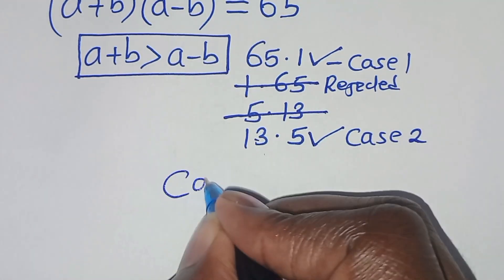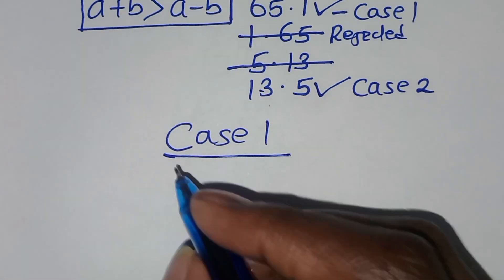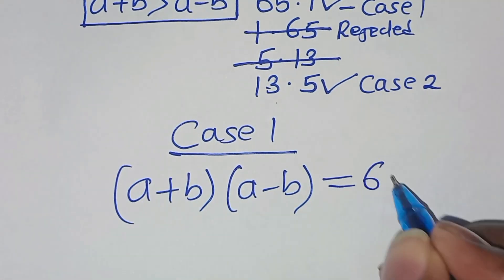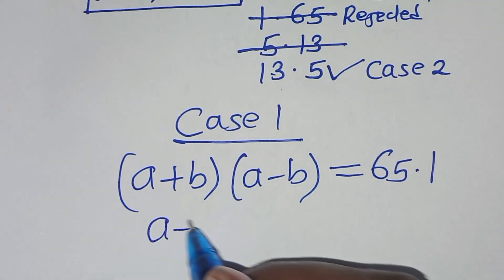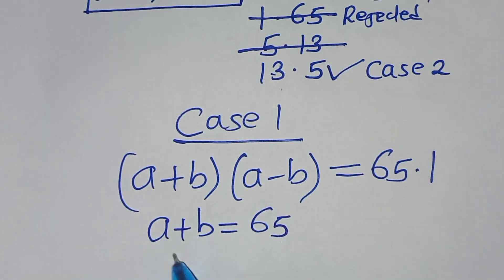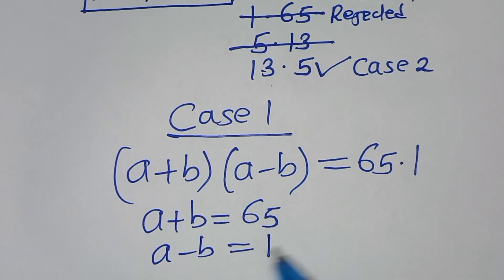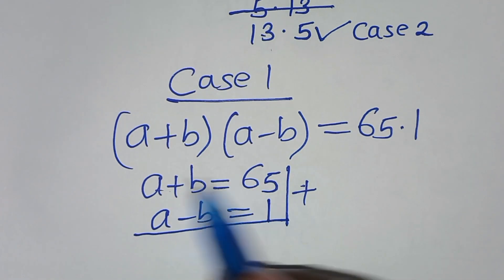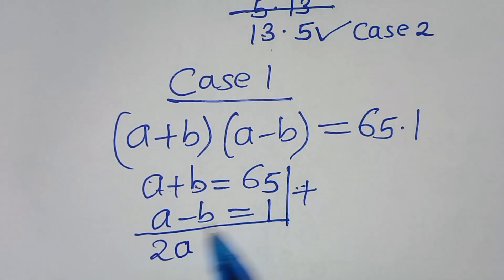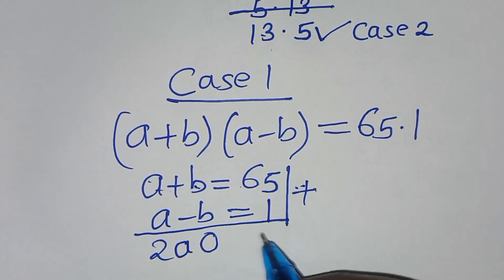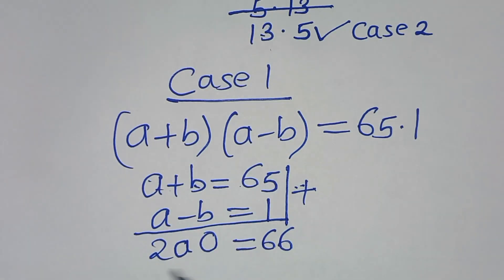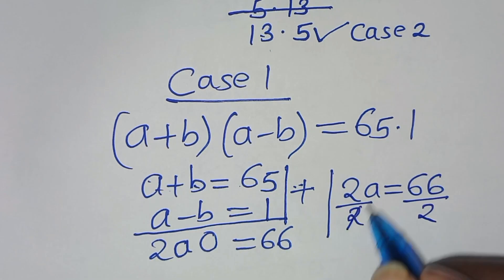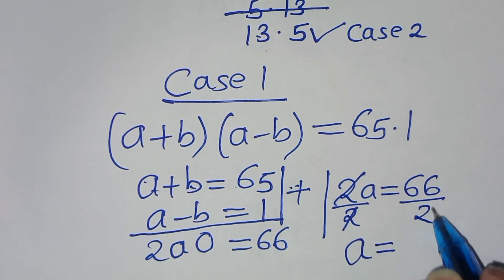Let's start with case 1. In case 1, we have a plus b multiplied by a minus b, this is equal to 65 multiplied by 1. So we have that a plus b equals 65, and we have that a minus b equals 1. This is a system of two simultaneous equations. Let's add these two equations: a plus a is 2a, and b plus minus b cancels. Dividing both sides by 2, we have that a is equal to 33.